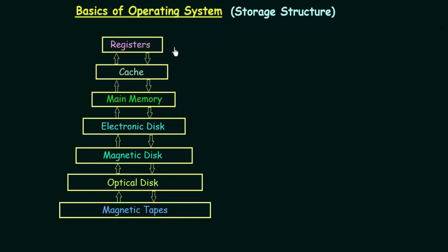Starting from registers: registers are the smallest storage devices and they store data in bits, that means in zeros or ones. Since they are the smallest and store only bits, they can be accessed very quickly. The cache is a little bigger than the registers, but its speed is a little slower.